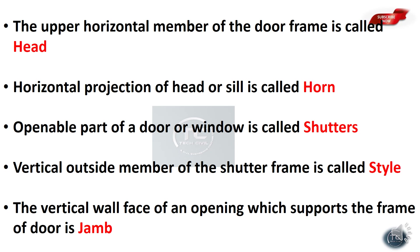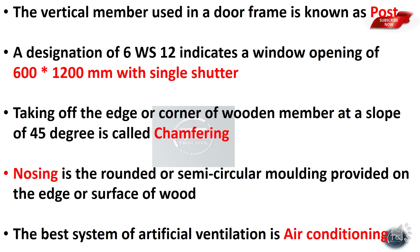The vertical wall face of an opening which supports the frame of a door is called a jamb. The vertical member used in a door frame is called a door post. The vertical member of a shutter frame is called a style.